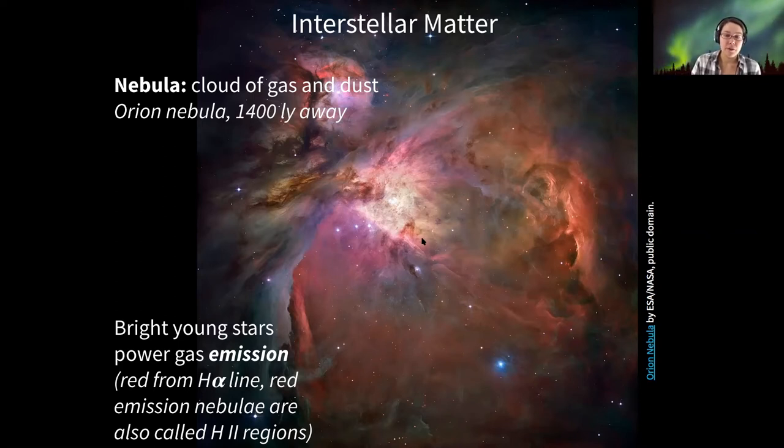So if you try to look for images of nebulae like this, they're sometimes also called H2 regions because of the particular atomic transition responsible for this red color.